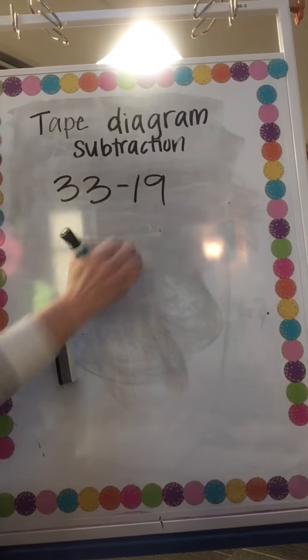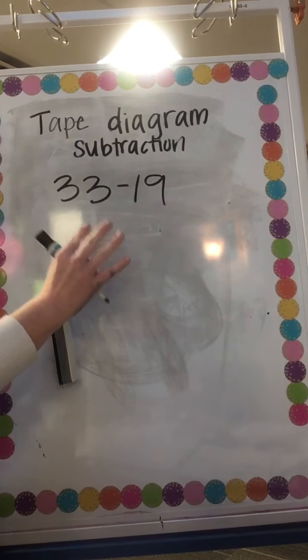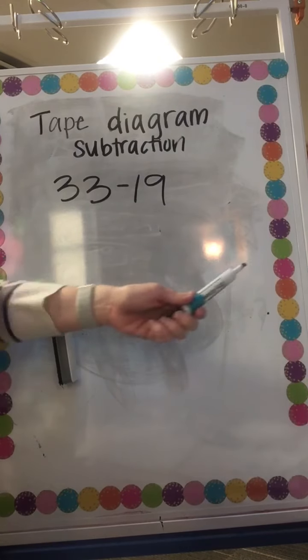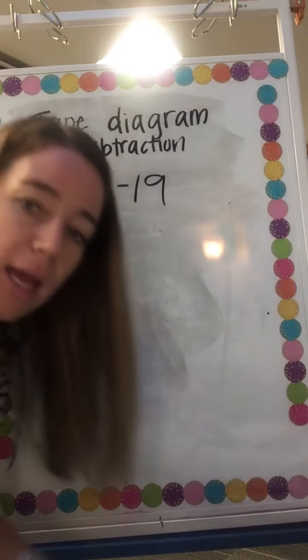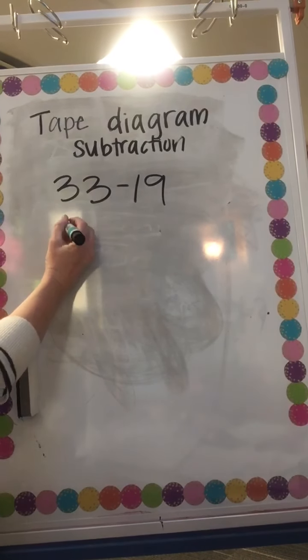All right, let's do 33 minus 19. I'm not gonna draw that out because that's gonna take me a really long time. If that's gonna get you the right answer and you're still on that strategy, that's fine.